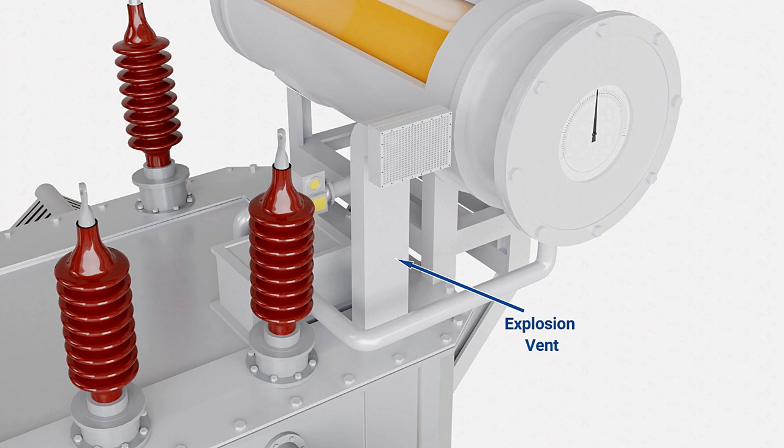An explosion vent is fitted on the roof of the transformer. It has a diaphragm which ruptures when pressure inside the transformer reaches certain levels and prevents explosion.